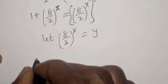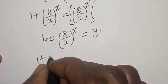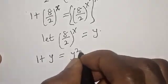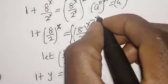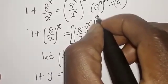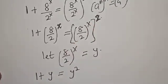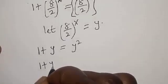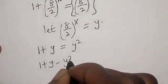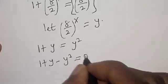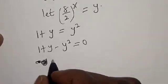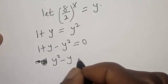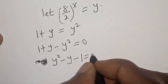Now we have 1 plus y is equal to y squared. Rearranging: 1 plus y minus y squared is equal to 0, which gives y squared minus y minus 1 is equal to 0.